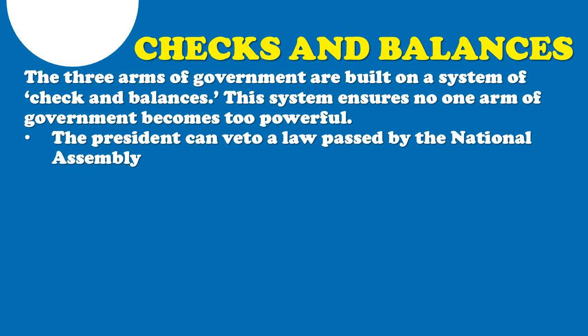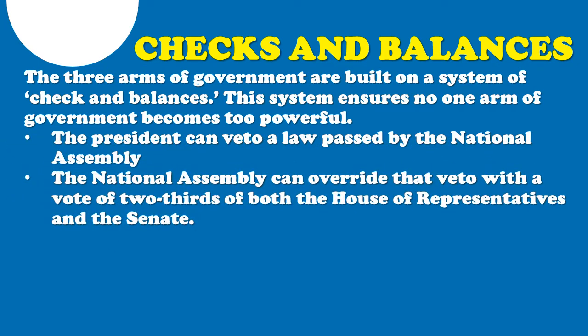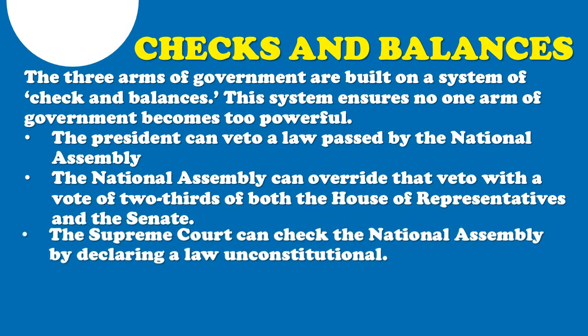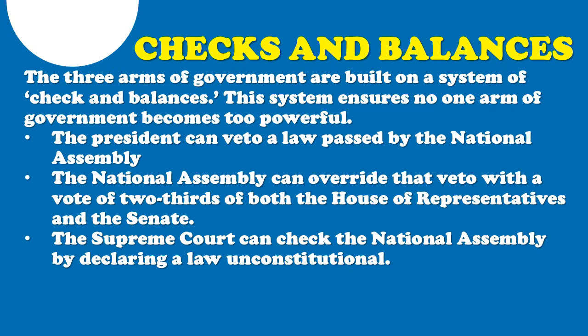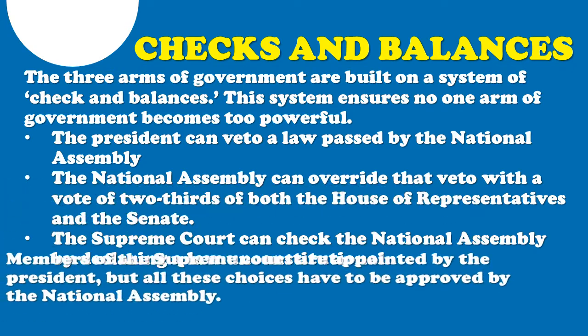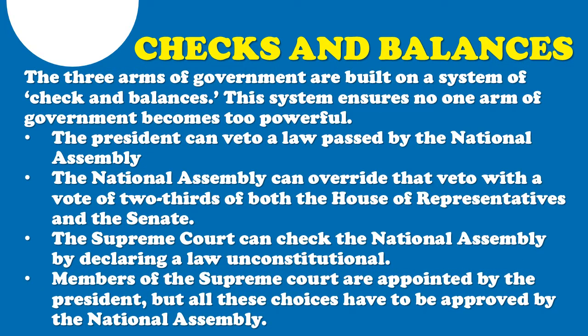Each arm of the government is checked by the two others in different ways. For example, the President can veto a law passed by the National Assembly. However, the National Assembly can override that veto with a vote of two-thirds of both the House of Representatives and the Senate. The Supreme Court can check the National Assembly by declaring a law unconstitutional. Members of the Supreme Court are appointed by the President, but all these choices have to be approved by the National Assembly. Checks and balance within the government are very important — they help to ensure that no arm of government abuses the power given to them, so that our government will be fair and just.